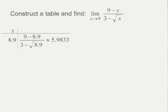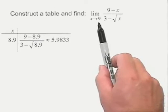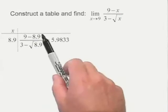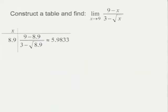So let's start by plugging in a value of 8.9. And again, that's a number very close to nine on the left. And we see, as we plug in the 8.9 into the top and into the bottom, we get a number approximately 5.9833.